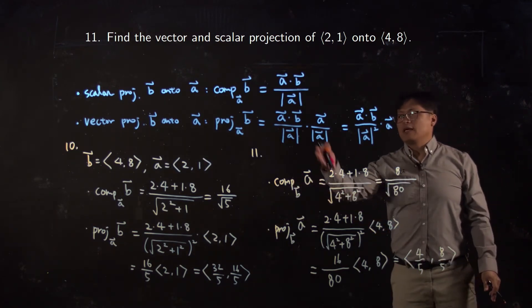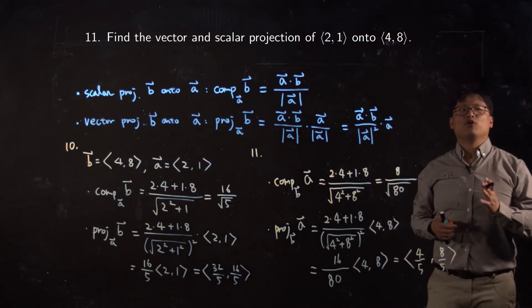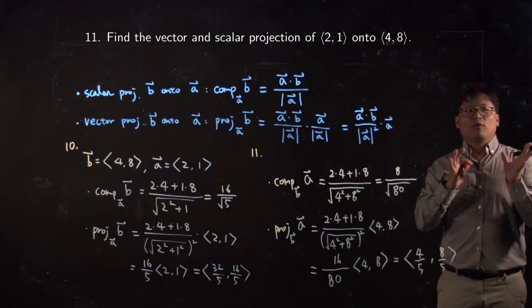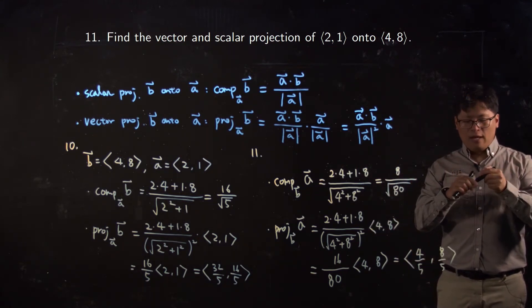Right. So from number 10 and number 11, I would like to show you that depending on the direction, they could be different. And what does that mean?